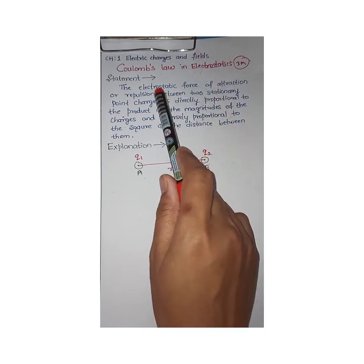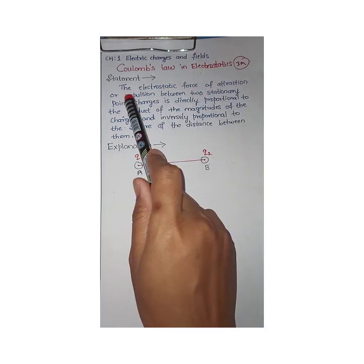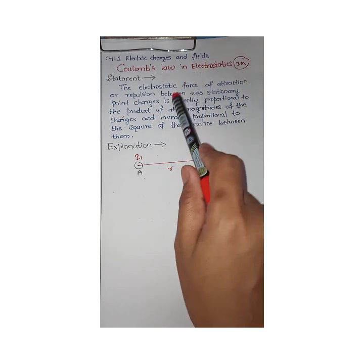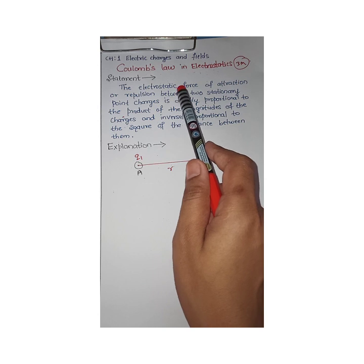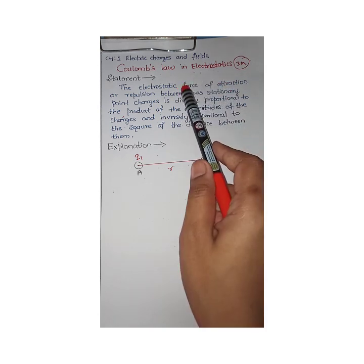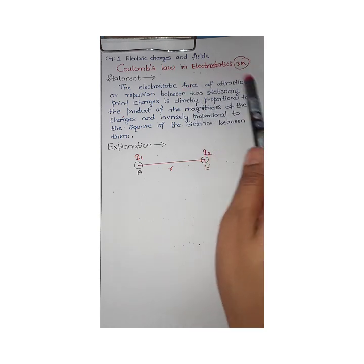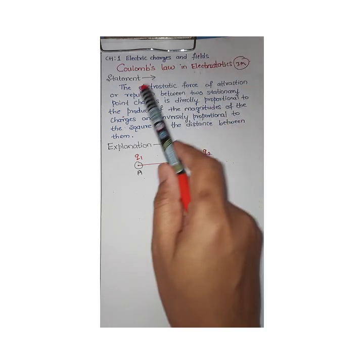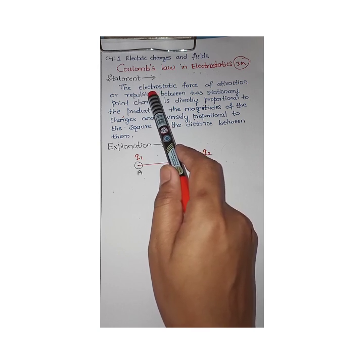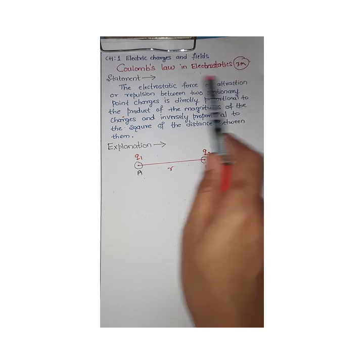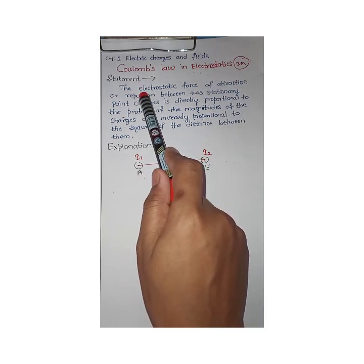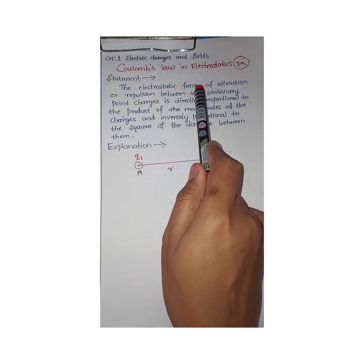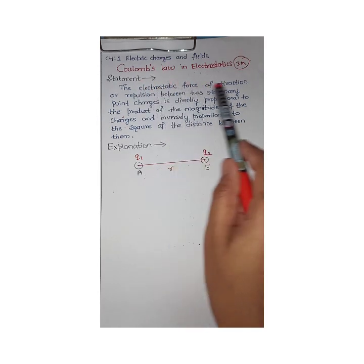The electrostatic force can be either attraction or repulsion depending on the nature of the charges. If the charges are unlike — one positive and one negative — the electrostatic force will be attractive. If both charges are the same kind — both positive or both negative — the electrostatic force will be repulsive.